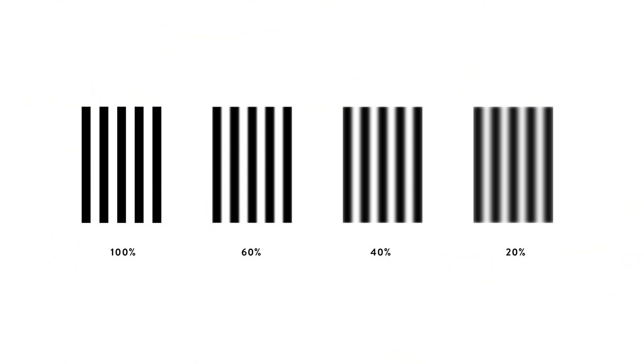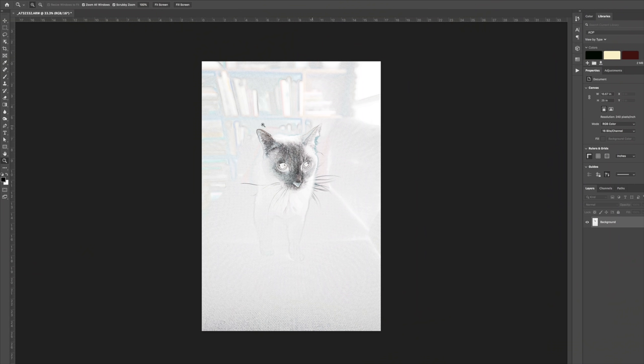We talked in the last video about MTF charts and how contrast is measured with line pairs — that's how sharpness is defined in any image. When you have detail and significant transitions edge to edge, you have sharpness. If it's not sharp, it won't have nearly as much definition and colors tend to bleed into one another. So I used this on the cat image just to show that yes, indeed, the very front part of my cat is in focus and the rest of the image is not.